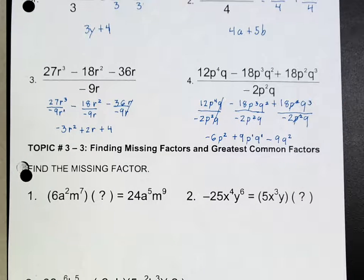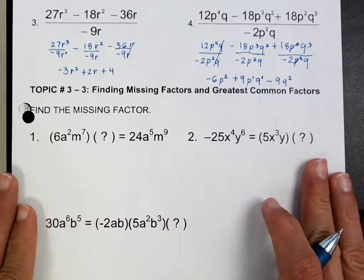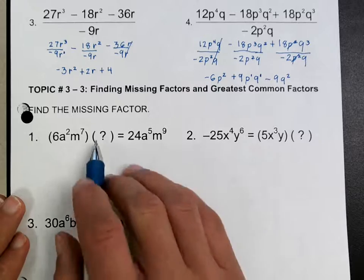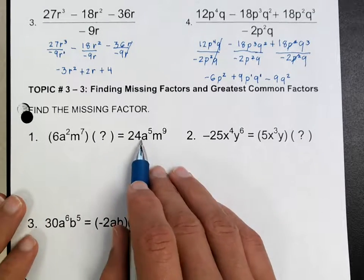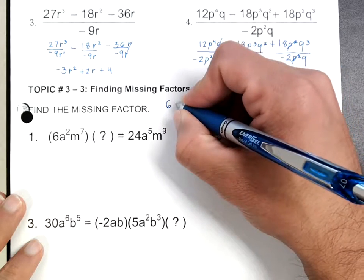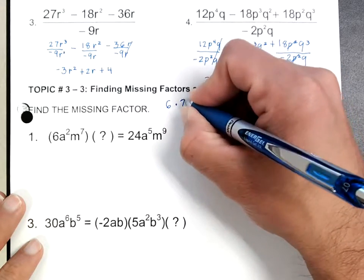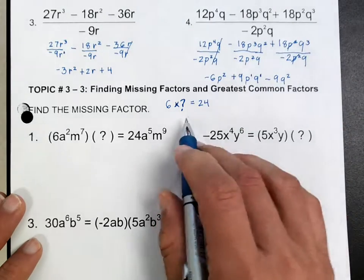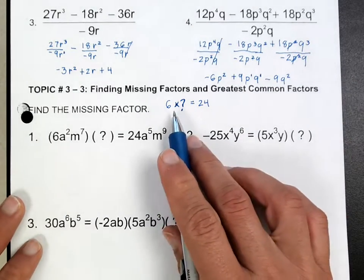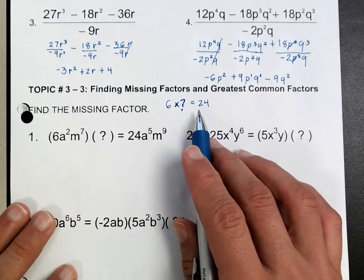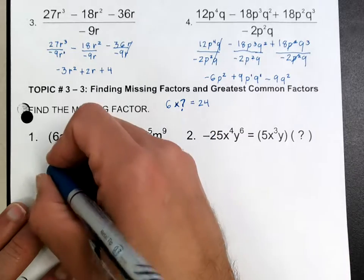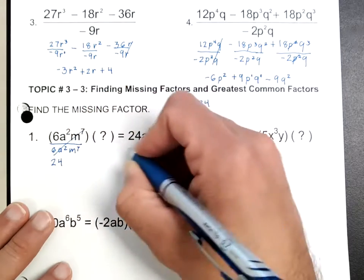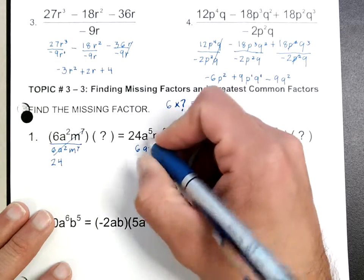On number 1 here, we're looking for the missing factors. What we're doing is trying to figure out what number, if you multiply it times this, you get that. For example, if I have a 6, what do I have to multiply by 6 to get 24? Well, 6 times 4 gives 24. If you don't know, what you can do to figure that out is divide both sides by 6a squared m seventh.